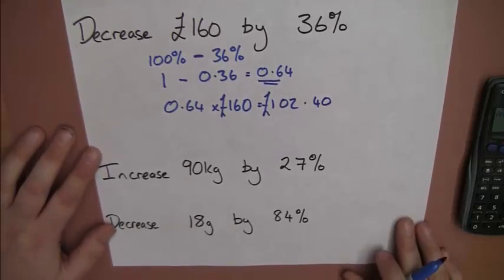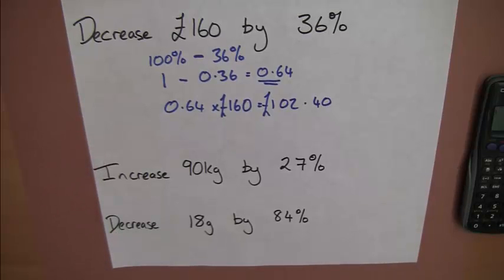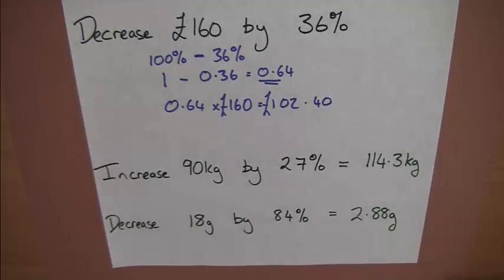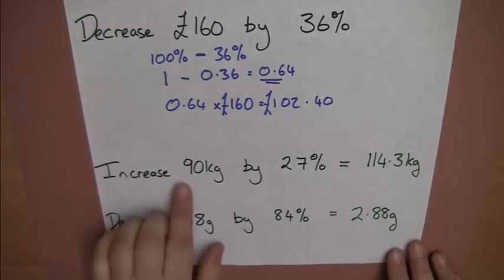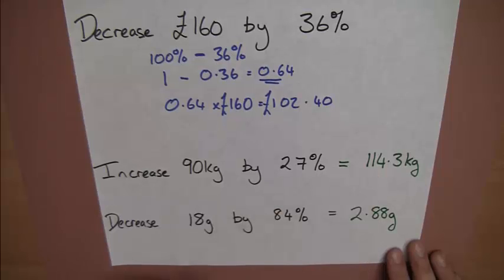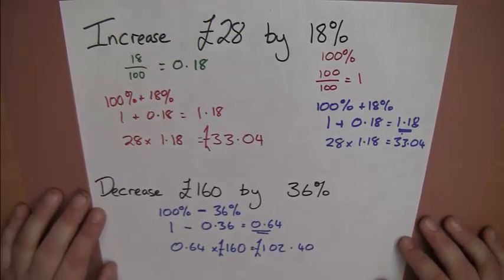Now, here's two quick questions you can have a go to practice. I'm going to do the answers for you, not the method, so you need to work them out yourself and check. Okay, here's the answers. We've got 90 kilograms increased by 27%, should have got you 114.3 kilograms. Decreasing 18 grams by 84% is 2.88 grams. And that's how we use a calculator when we're working out percentages of amounts, particularly when we're increasing and decreasing.